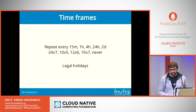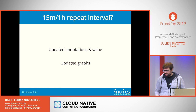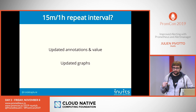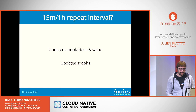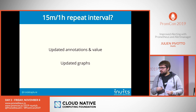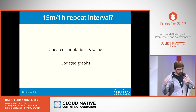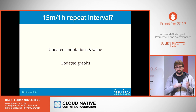Why do we have a 15-minute repeat interval? Because when you have that, you can actually get an updated annotation and updated value from your alert, which is quite useful — you're really up to speed with what's going on. Some receivers graph things in Grafana, which means you'll have an updated graph every 15 minutes. We take all the labels from the alert, the start time, and pass that to the Grafana dashboard so we have exactly the right dashboard for that incident.